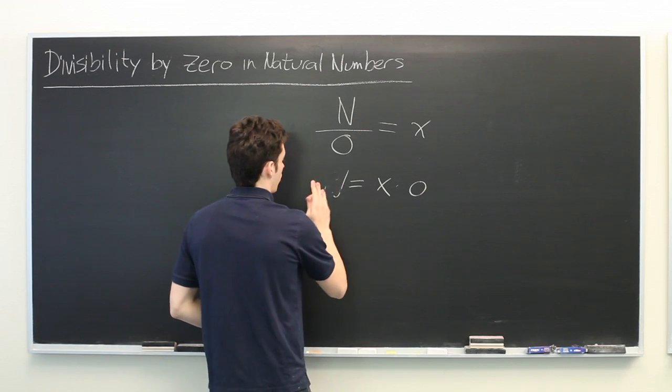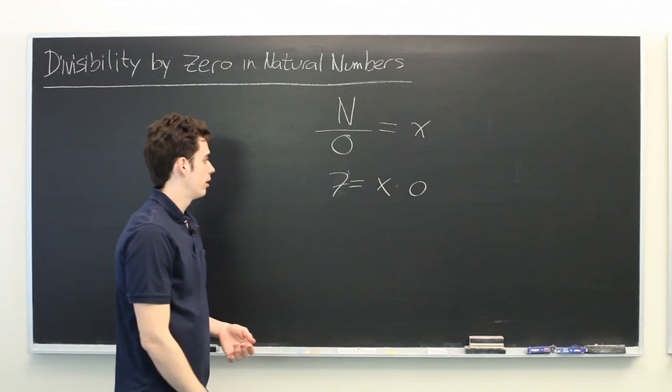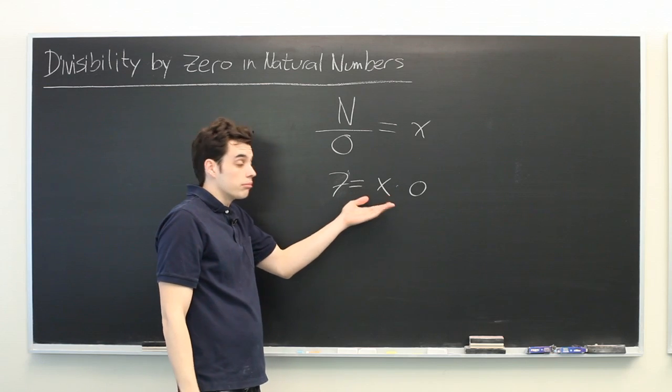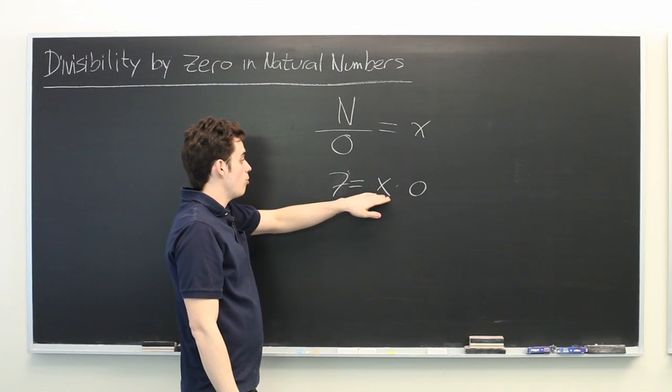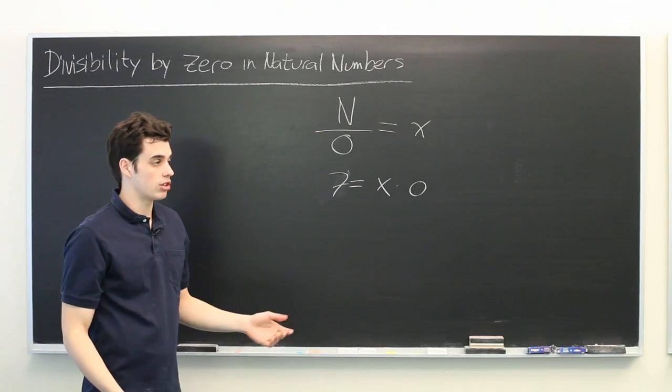Well, if we replace this with a specific example, such as 7, we'll see that there is no answer. No number that you put in for x will allow you to multiply it by zero and get 7. It's simply not possible.